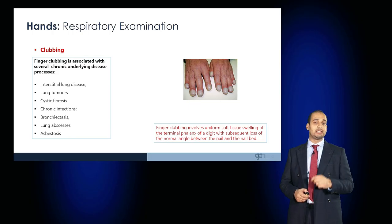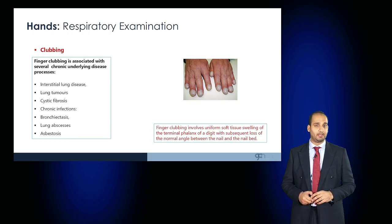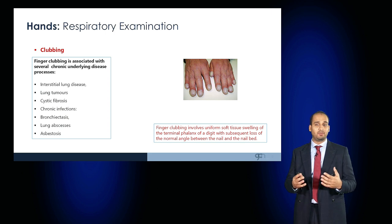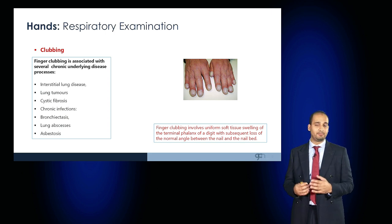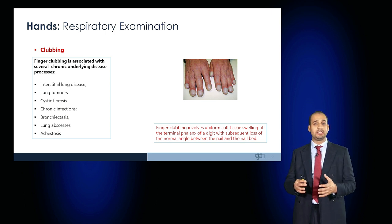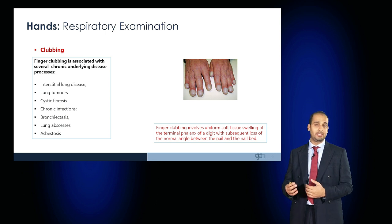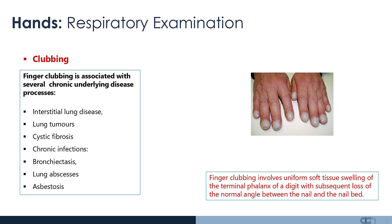In the hands, assess for signs of clubbing. Clubbing is the uniform soft tissue swelling of the terminal phalanges of the digits resulting in a loss of the normal angle between the nail and the nail bed, and usually indicates chronic conditions. In the context of a respiratory examination, chronic conditions such as interstitial lung disease, neoplasia, cystic fibrosis, chronic infections such as bronchiectasis, lung abscesses, and asbestosis may result in clubbing.